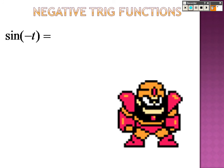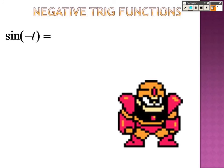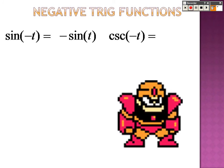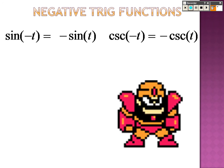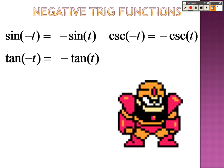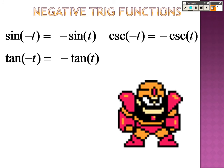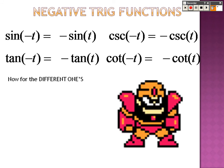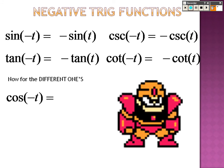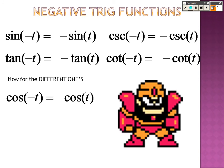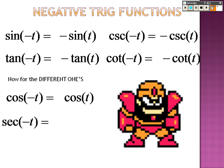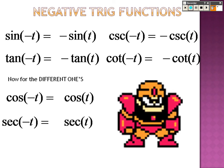Remember negatives with trig functions. When you have a negative on the inside with sine, you just pull it out: negative sine of t. The same applies to cosecant since it's the reciprocal of sine. Tangent works the same way — pull the negative out to get negative tangent of t — and cotangent is the same. The only one that's different is cosine: with a negative on the inside, cosine of negative t is just cosine of t. Secant works the same way as cosine — the negative on the inside doesn't matter.